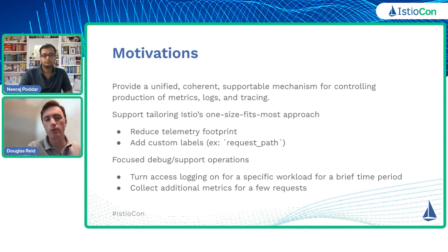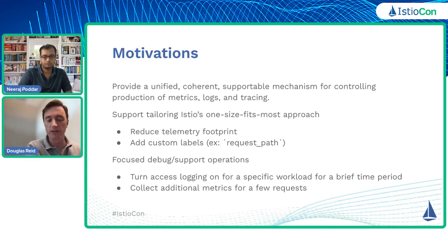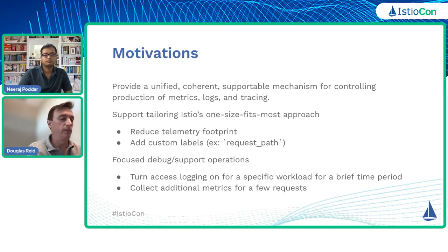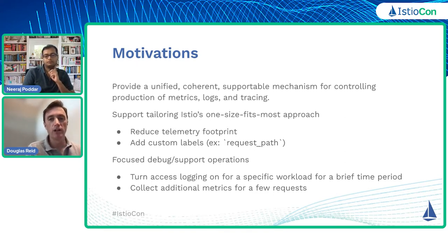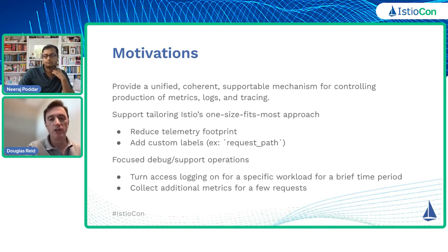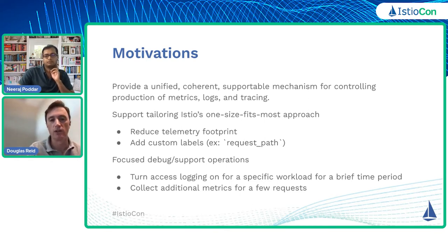Some cases involved people not wanting to generate certain metrics because they took up too much space — they didn't care about, say, request size. Others wanted to add the request path to all their metrics, which would break cardinality for others. We needed a way to support both use cases without just playing with Envoy filters that you'd have to upgrade every time you upgraded Istio. Another big use case was debug and support operations — turning on access logging for a specific workload, not across your mesh, without rebooting proxies or restarting workloads.